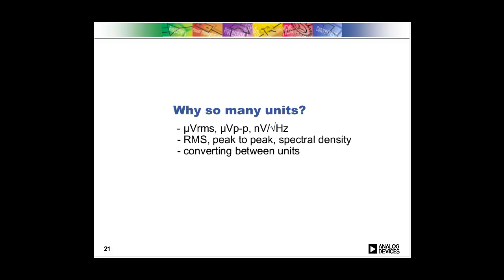We've thrown around, you've seen a lot of different units in the past few slides. You've seen RMS units peak-to-peak, nano volts per root hertz. And I think that sometimes it can be confusing why do we have all of these units? Why are they useful? And these units actually correspond to different ways of measuring noise. So there's, you can measure noise RMS, you can measure peak-to-peak, or you can measure the spectral density of noise.